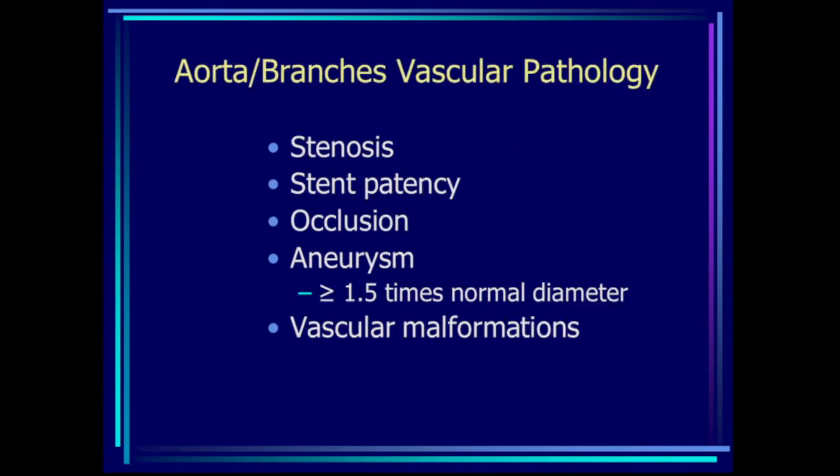When we talk about the aorta and its branches, the pathology that can affect them includes stenosis, patency of indwelling stents, vascular occlusions, aneurysms of any of the vessels — defined as 1.5 times the normal diameter of the vessel — and vascular malformations.